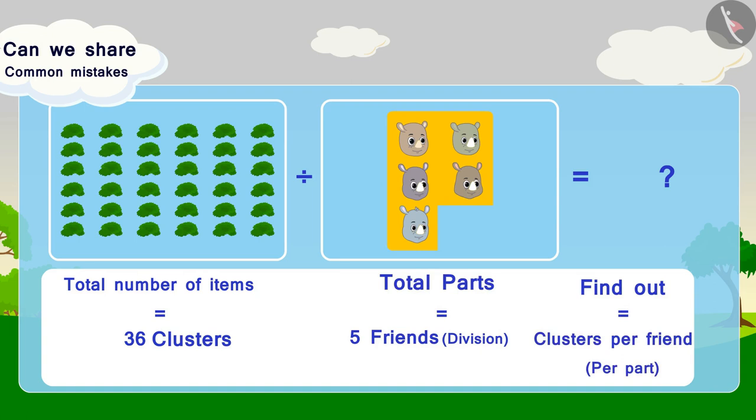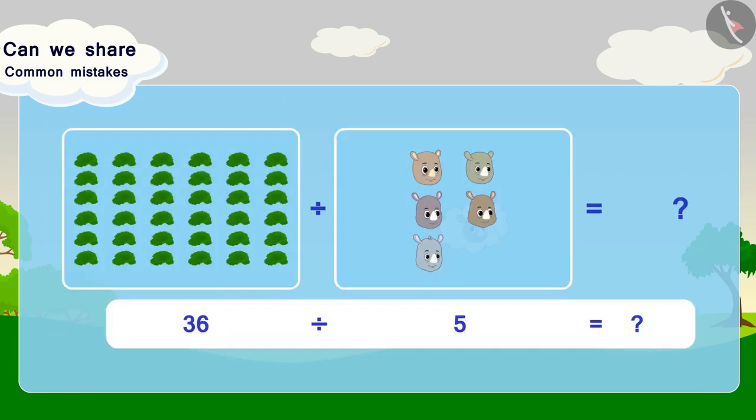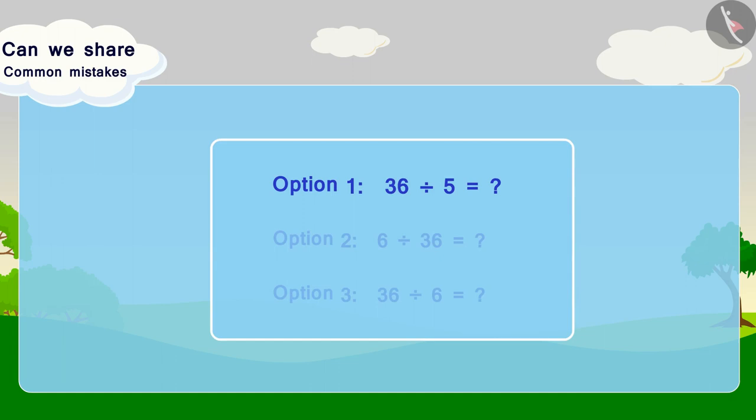But what will poor Gaggoo eat? In this option, we have not included Gaggoo while calculating the total parts. Here, the total number of parts is wrong. For this reason, this option is incorrect. This is a very common mistake that we make when we divide.